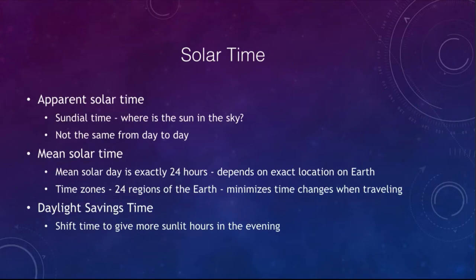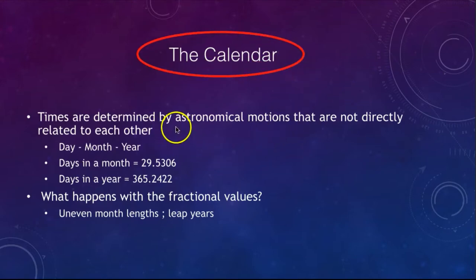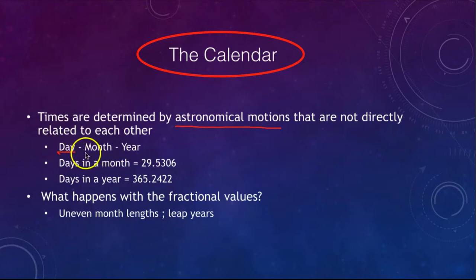Our calendar is very complex because it is determined by astronomical motions that are not related to each other. This is why months have different numbers of days, why there is not an even number of days in a year, and why we sometimes have leap years. There are about 29.5 days in an average month, so we have some months with 30 days, some with 31, and one with 28 — averaging out to about 29.5.